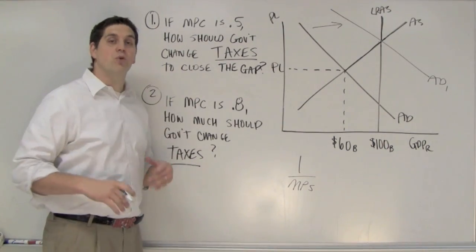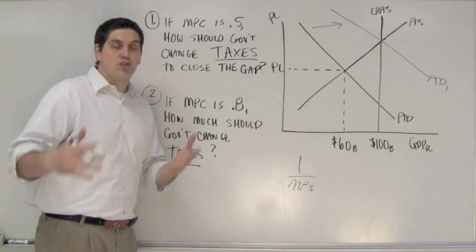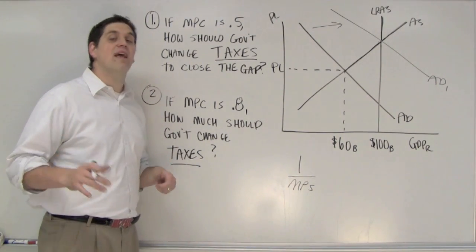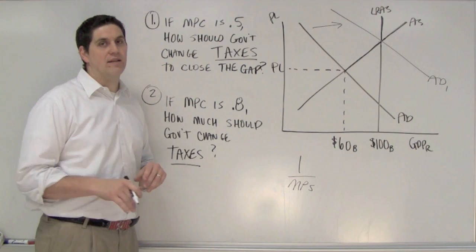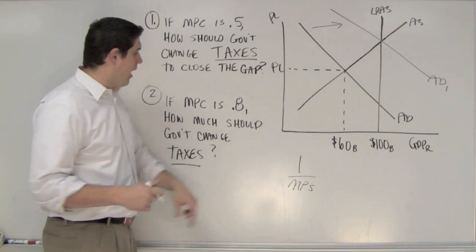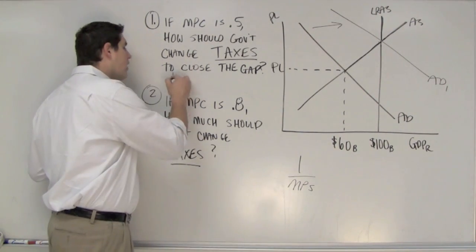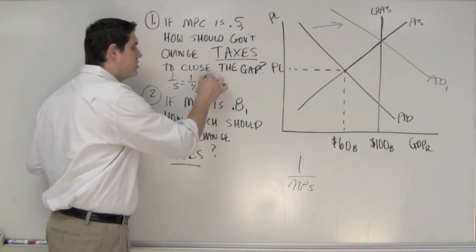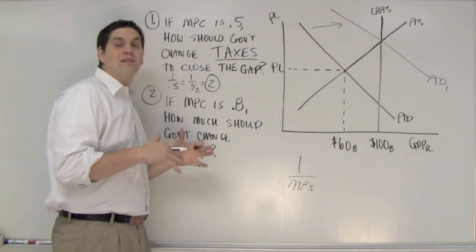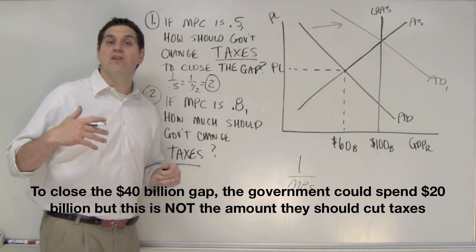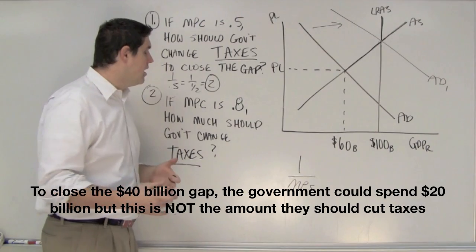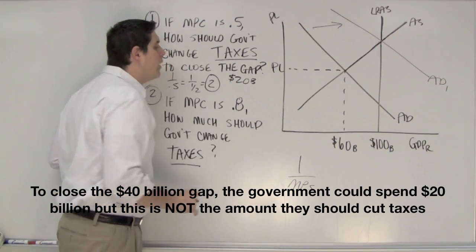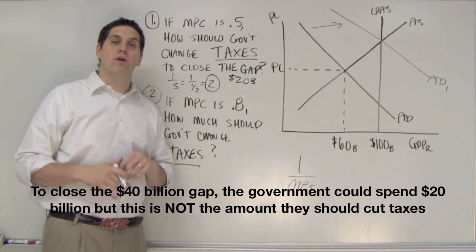If the marginal propensity to consume is 0.5, that means people consume half of additional income coming in and save the other half, including a tax cut. So let's calculate the multiplier first. It's 1 over 0.5, which is 1 over one-half, which equals 2. The multiplier is 2. Last time we did this question, the right answer was $20 billion.